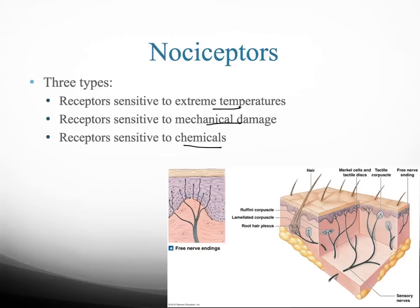The type of receptor for nociceptors is the free nerve ending, which we saw when we talked about the receptive field. It's going to have a large receptive field, which is why when you go to the doctor and they ask where you feel pain, you can't really pinpoint it — because the free nerve ending has a large range of receptive field.